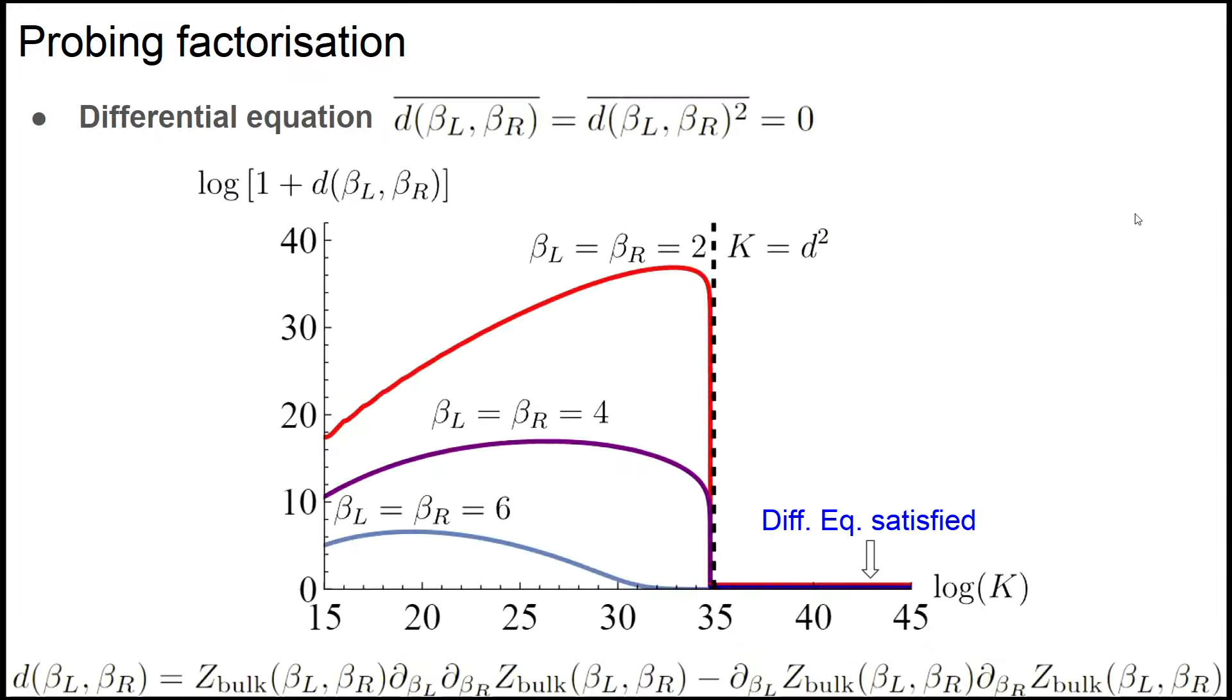We can use another technique to probe factorization: consider this differential equation. This differential equation acting on any factorized function will give you zero. So to probe factorization, we consider the average of the differential equation and even the square of the differential equation. We show that both averages give zero if you span the full Hilbert space, meaning not only on average but for each member of the ensemble we get factorization.